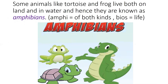Some animals like tortoise and frog live both on land and in water — they are known as amphibians. Amphibian means to live a double life: 'amphi' means of both types and 'bios' means life. This term is used for the group of animals that spend part of their lives in water and part on land.